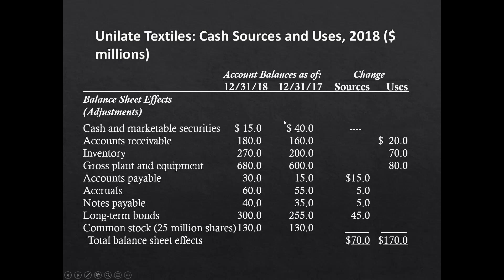Walking through Unilate's sources and uses of cash: cash decreased by $25 million even though the company made money. Accounts receivable went up $20 million — sales made but cash not collected, a use of cash. Inventory went up $70 million — bought and stored more inventory without selling it, a $70 million use of cash. Gross plant and equipment went from $600 million to $680 million — $80 million spent on new plant and equipment.